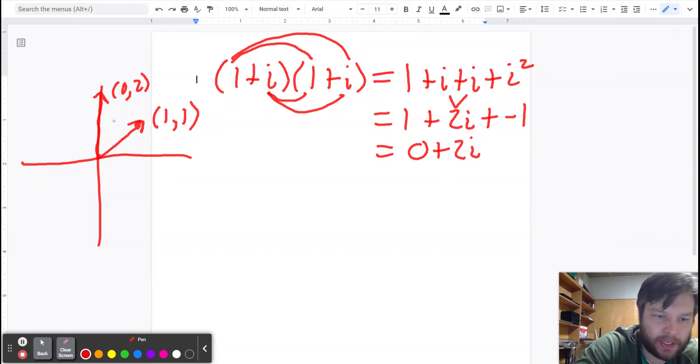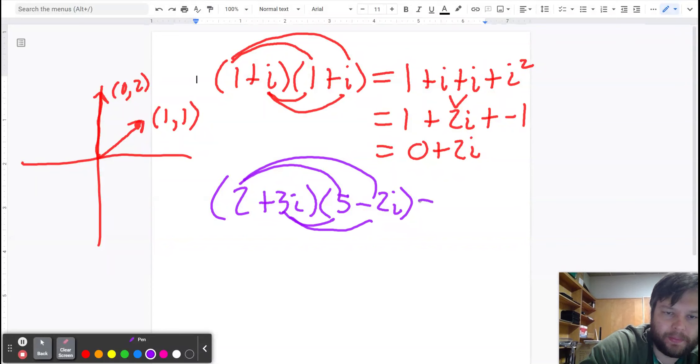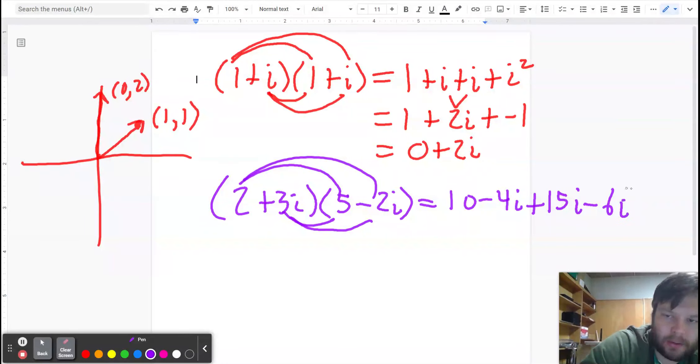Let's look at another example. Let's take two plus three i times five minus two i. Multiply, multiply, multiply, multiply, multiply. 10 minus four i plus 15 i minus six i squared. Combine the like terms.